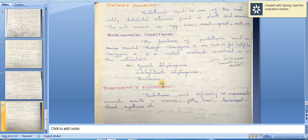Pantothenic acid deficiency in experimental animals results in anemia, fatty liver, decreased steroid synthesis, etc. This is the overview of pantothenic acid, vitamin B5. Thank you.